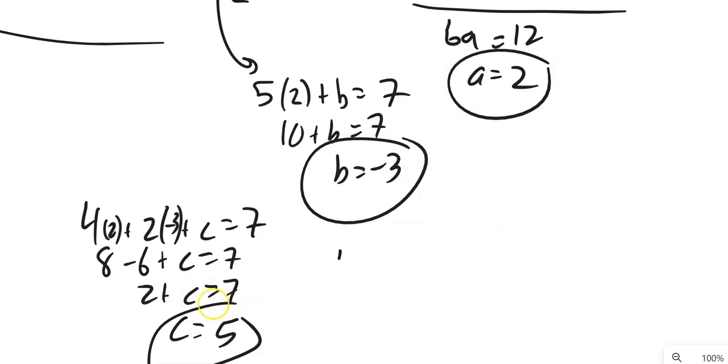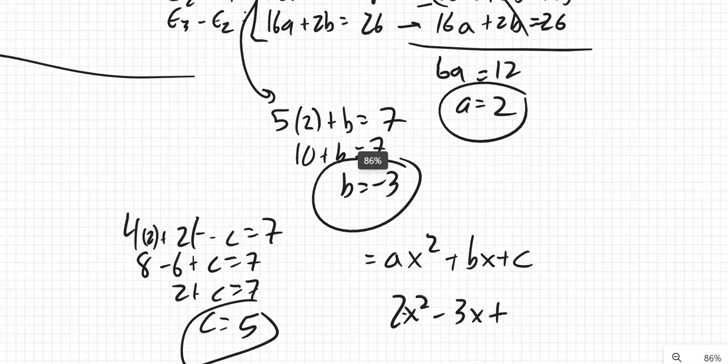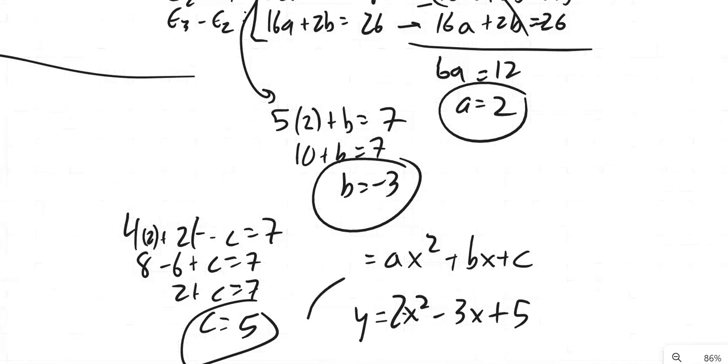So, I found a, b, and c, but what I'm looking for is the equation, right, that's in this form. So, let's see. a is 2. b is negative 3. c is 5. There's my equation.